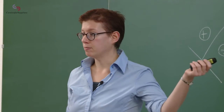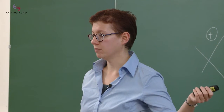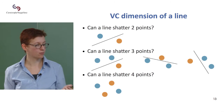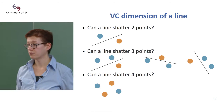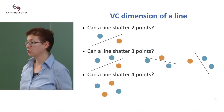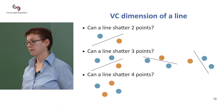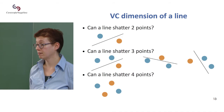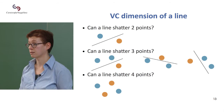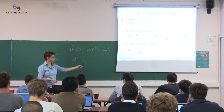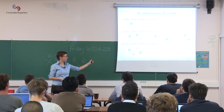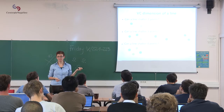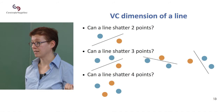The cases where all points have the same label are always easy. For three points, the cases where they have different labels necessarily have two of one class and one of the other, and you can always draw a line. Now can a line shatter four points? If I take four points, there's always one labeling for which I won't find a line that separates them.